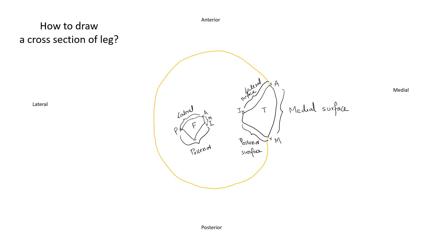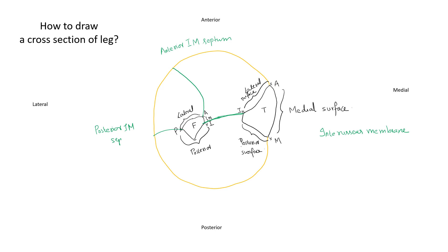Now let's draw the intermuscular septa and the interosseous membrane which divide the leg into different compartments. Extending between the interosseous border of the fibula and the interosseous border of the tibia is the interosseous membrane. Extending from the anterior border of the fibula to the deep fascia is the anterior intermuscular septum. Extending from the posterior border to the deep fascia is the posterior intermuscular septum. This gives us the anterior compartment, the lateral compartment, and the posterior compartment of the leg.